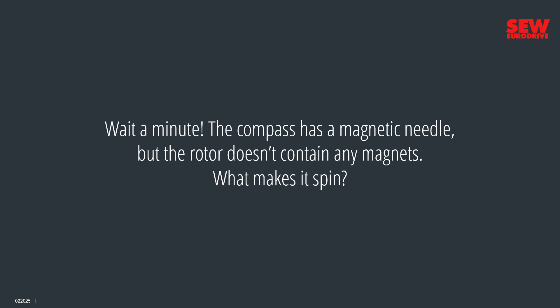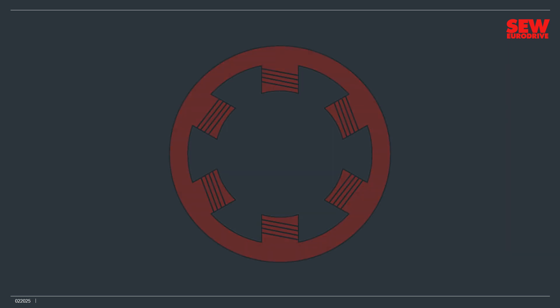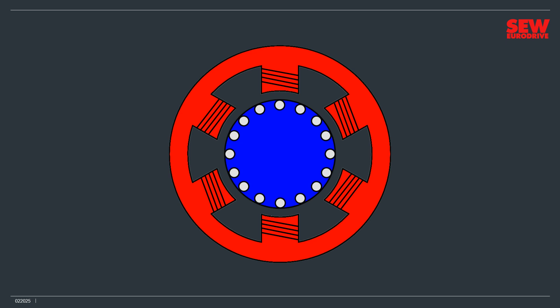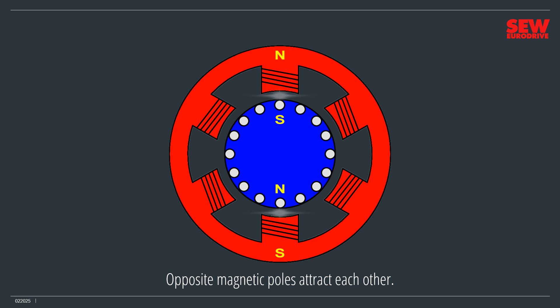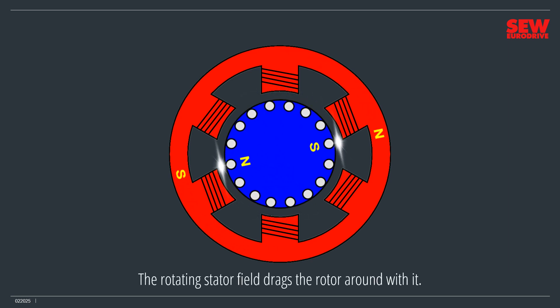But wait – the compass has a magnetic needle, but the rotor doesn't contain any magnets. What makes it spin? The stator's magnetic field passes through the rotor's squirrel cage and induces an electric current in it. That electric current flowing through the rotor cage creates a second magnetic field which surrounds the rotor, making it a magnet. That second magnetic field's polarity is opposite to the stator's magnetic field. As you may remember from science class, opposite poles attract – so the rotor and stator fields attract each other. As the stator field rotates, it drags the magnetized rotor around with it, producing mechanical motion.